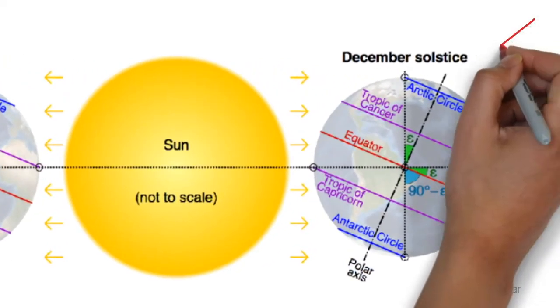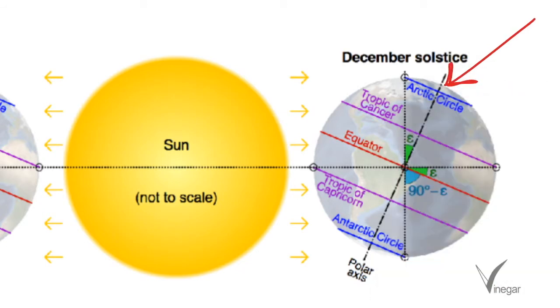In the arctic circle the sun does not even rise on 22nd December. And if we move further away from the arctic circle towards the north pole, the duration of darkness increases even more.